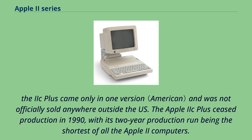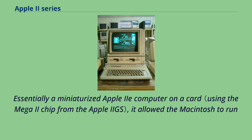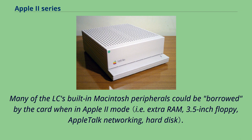Although not an extension of the Apple II line, in 1990 the Apple IIe card, an expansion card for the LC line of Macintosh computers, was released. Essentially a miniaturized Apple II computer on a card, it allowed the Macintosh to run 8-bit Apple II software through hardware emulation. Many of the LC's built-in Macintosh peripherals could be borrowed by the card when in Apple II mode, however the IIe card could not run software intended for the 16-bit Apple IIgs.